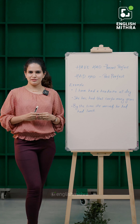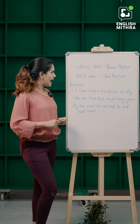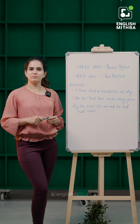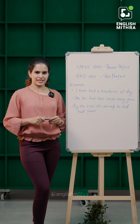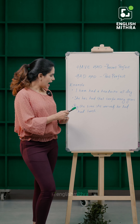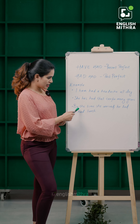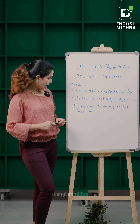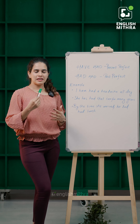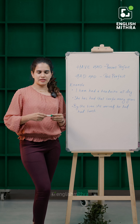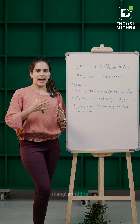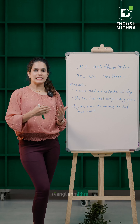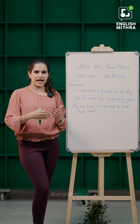Hope that is clear for you. Our second form is 'had had' — past perfect tense. For example: By the time she arrived, he had had lunch. 'Had had' denotes an action that happened exactly before another past action started.